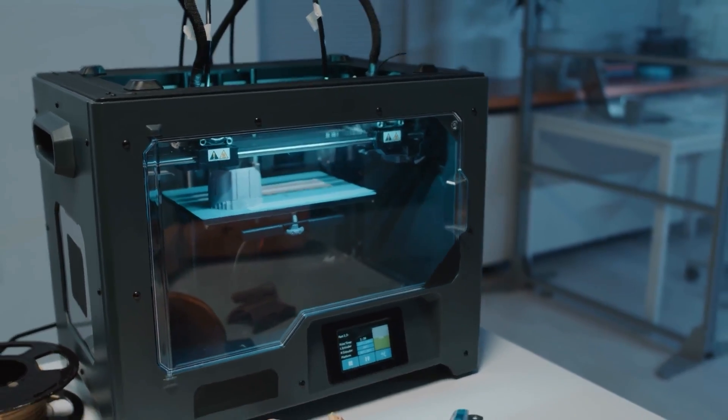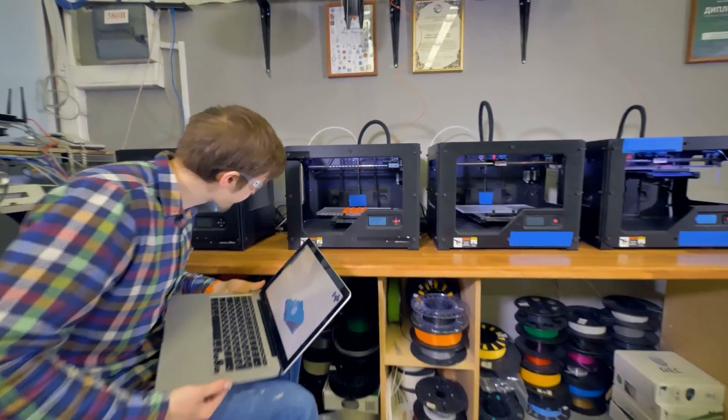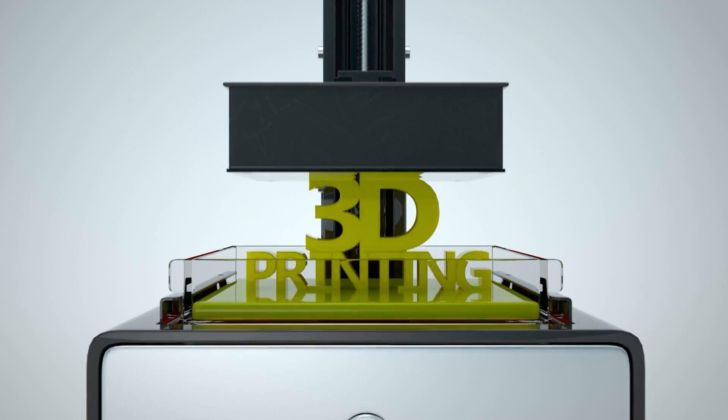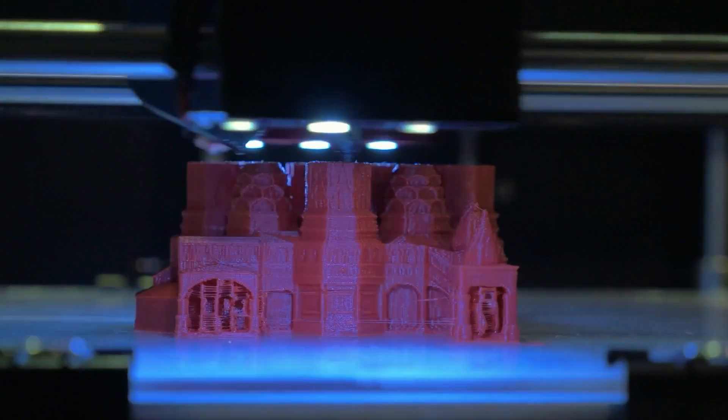When doing product development, 3D printing is generally the technology that you're going to use to produce any custom plastic prototype parts. With 3D printing, you can literally print just about any shape of part that your mind can imagine. It's a very forgiving technology without many design limitations. And this may sound great, but there's one big problem that you need to be aware of.